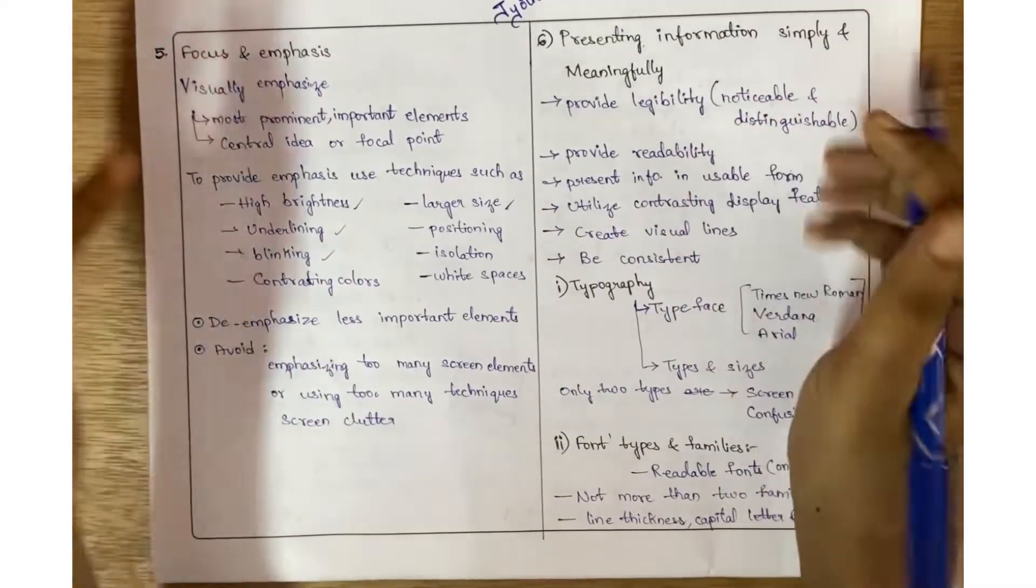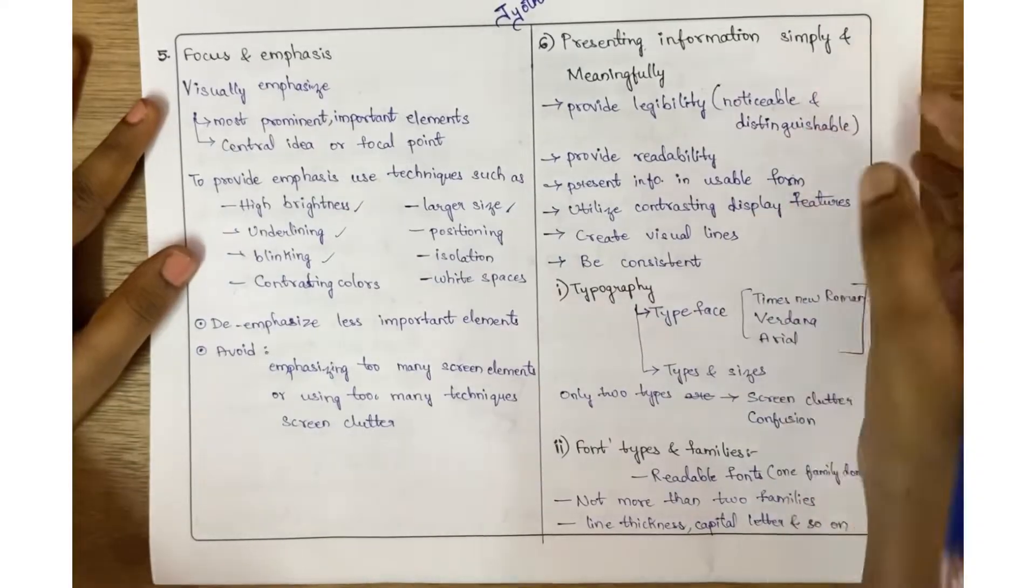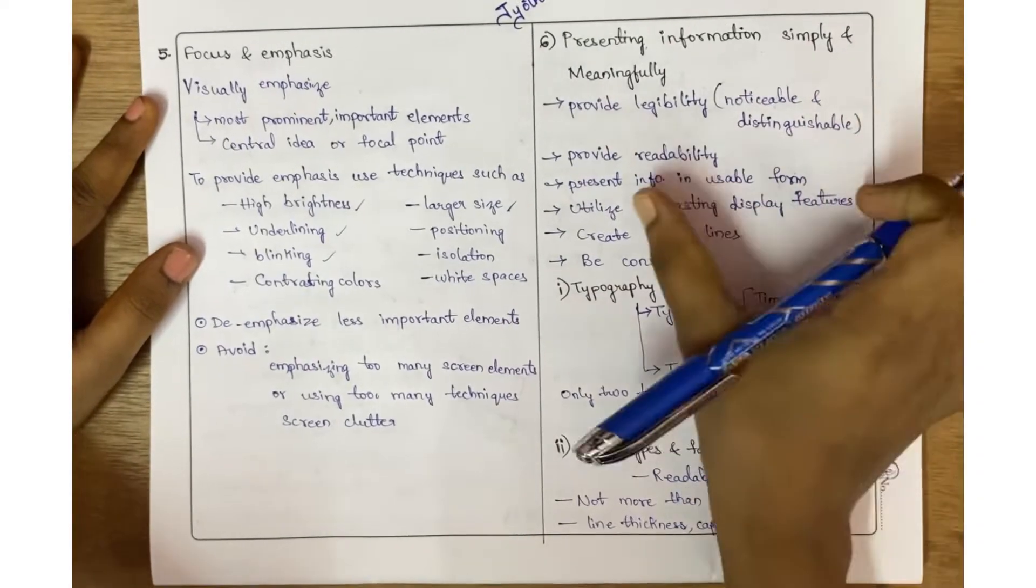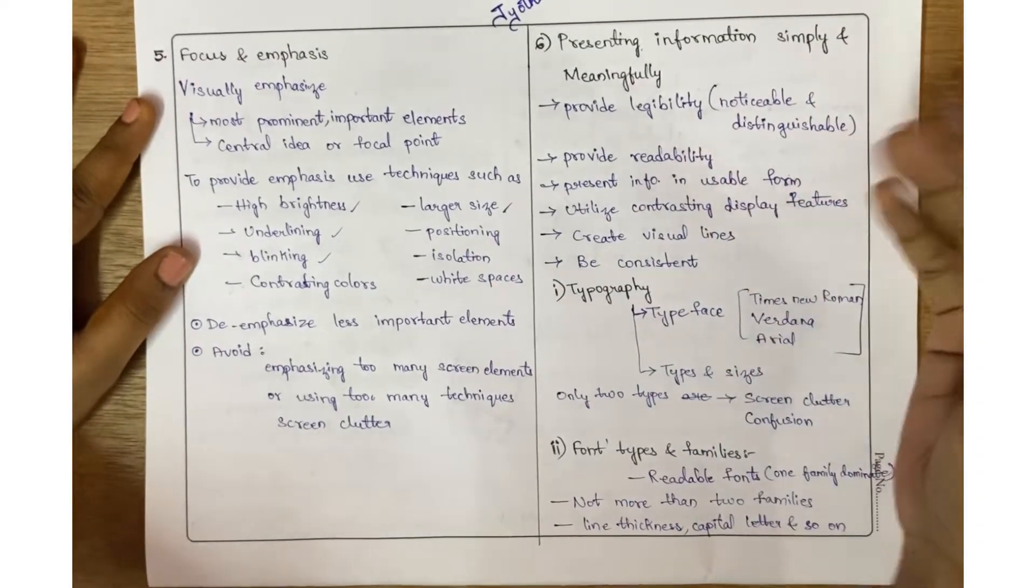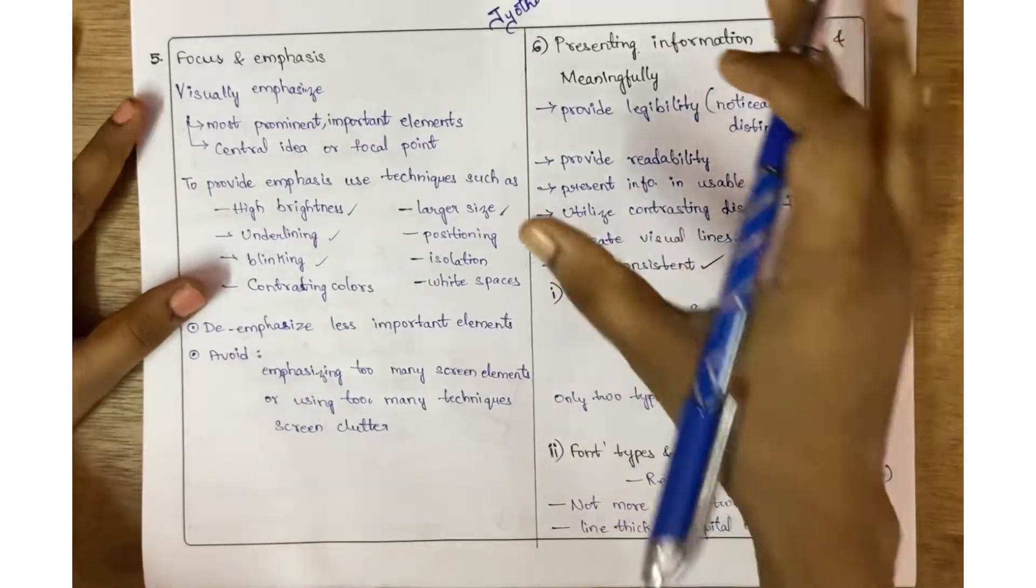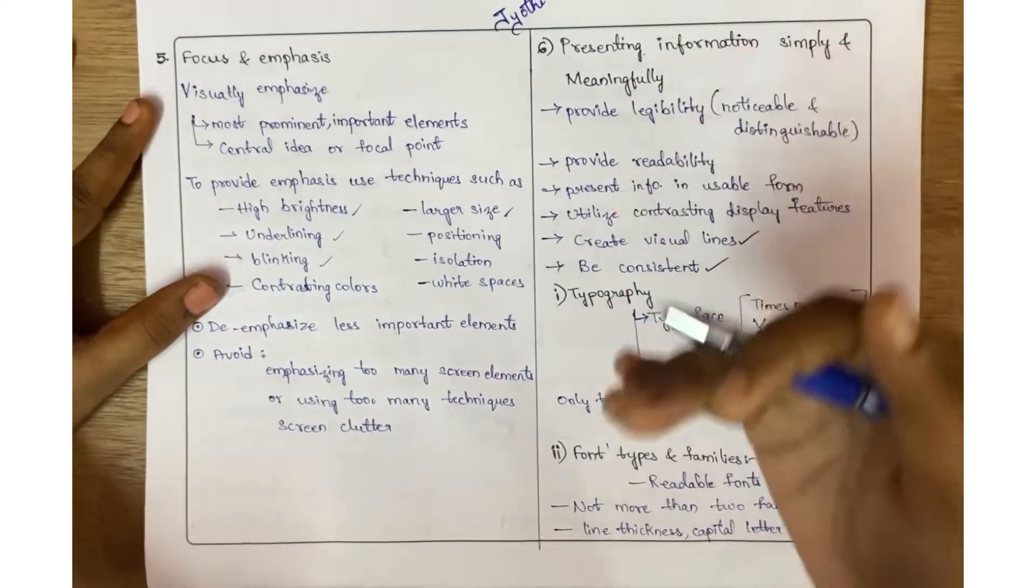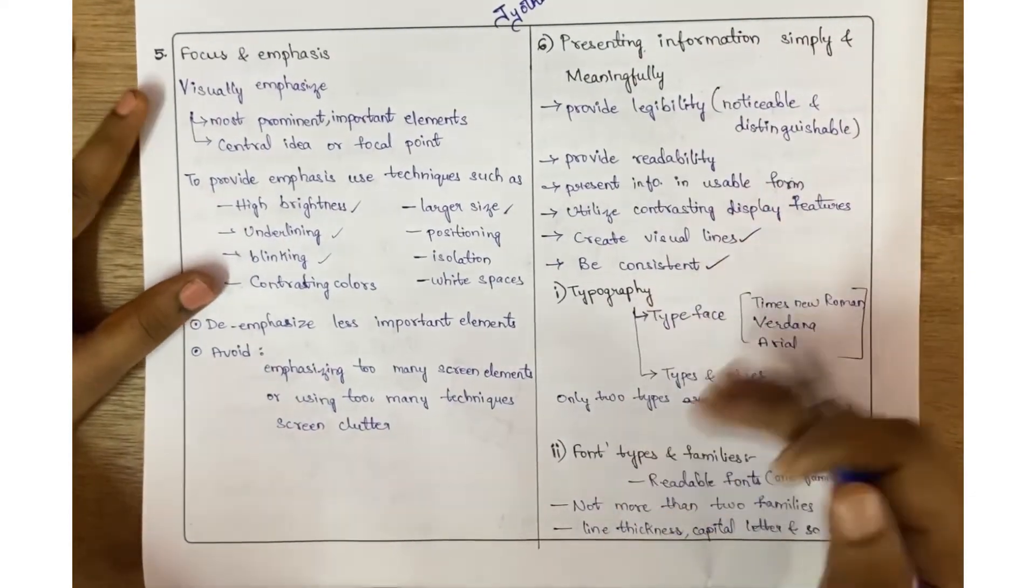We need to provide legibility, a noticeable and distinguishable path, and readability by presenting information in a usable format. Also display features like creating visual lines and being consistent. For this purpose, for presenting information simply and meaningfully, they have provided topics under it like typography.